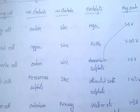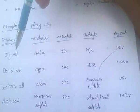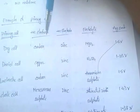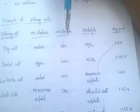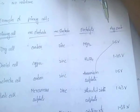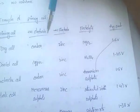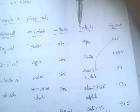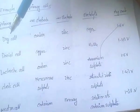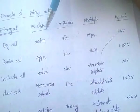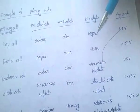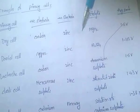First, the dry cell: the positive electrode (anode) is carbon, the negative electrode (cathode) is zinc, and the electrolyte is MnO₂ (manganese dioxide). For the Daniel cell: the positive electrode is copper, the negative electrode is zinc, and the electrolyte is H₂SO₄ (sulfuric acid).